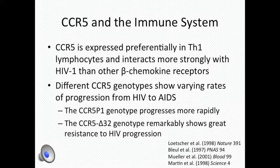In practice, humans with variations to the gene CCR5 tend to progress from HIV to AIDS at different rates. For example, humans with the CCR5P1 genotype progress quite rapidly, whereas those with the CCR5 Delta 32 mutation show the greatest resistance to HIV progression.